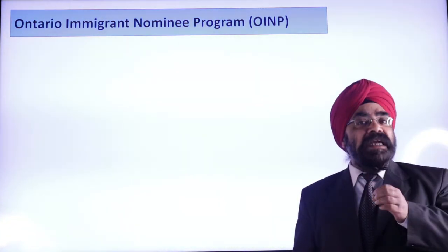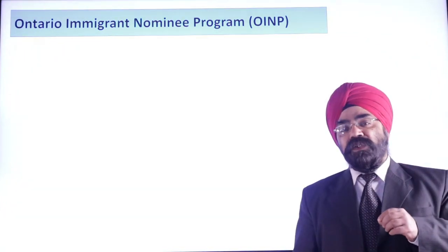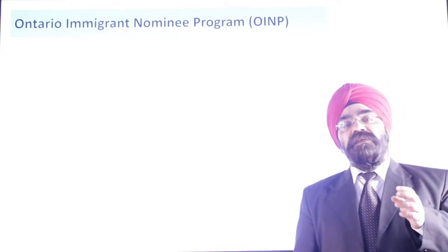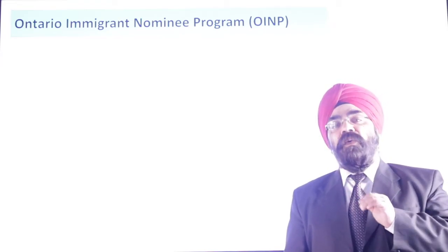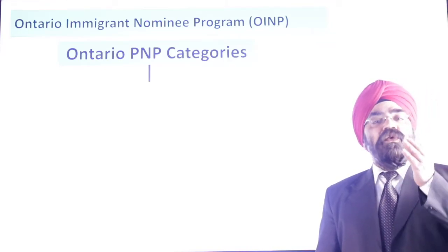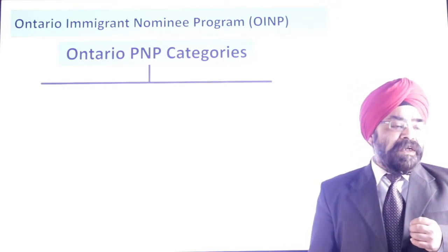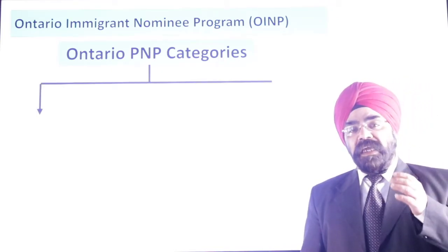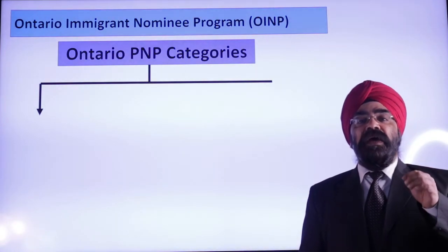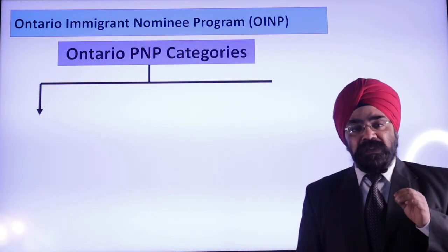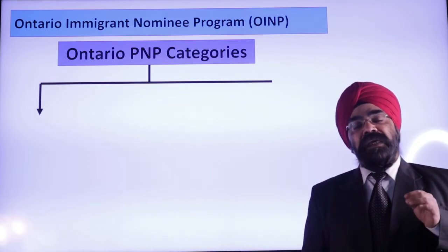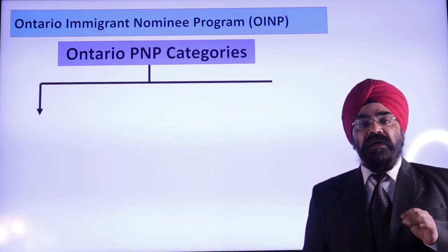There are so many categories that if you don't understand them, you will get confused. There are some categories where you need to have a federal profile, and some where a federal profile is not required. Ontario PNP is basically divided into four categories. The first is Express Entry — as the name suggests, this is linked with federal Express Entry, so you need to have a profile in the federal Express Entry system and also submit an expression of interest in the Ontario PNP program.